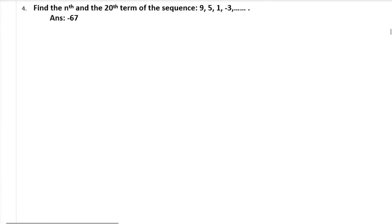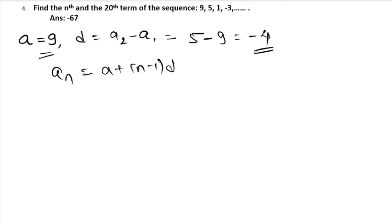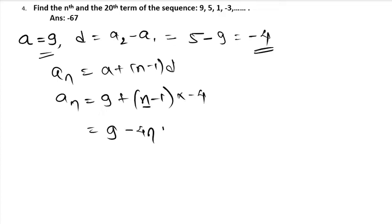Write the nth and 20th term of the sequence 9, 5, 1, minus 3. First term A equals 9. Common difference D equals A2 minus A1 equals 5 minus 9 equals minus 4. The nth term is A plus (n minus 1) into D, which is 9 plus (n minus 1) into minus 4. Expanding: 9 minus 4n plus 4, which simplifies to 13 minus 4n. This is the nth term formula.